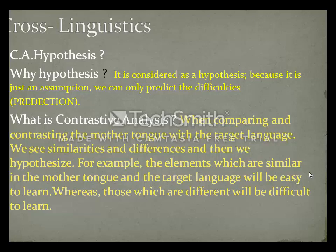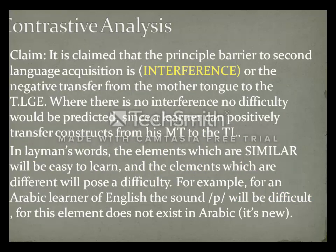Similarities will cause successful learning, whereas differences will pose a difficulty. One of the biggest claims in the Contrastive Analysis Hypothesis is that the principal barrier to second language acquisition is interference. Interference is a classical term meaning negative transfer — it is used pejoratively in this context and carries negative connotations.